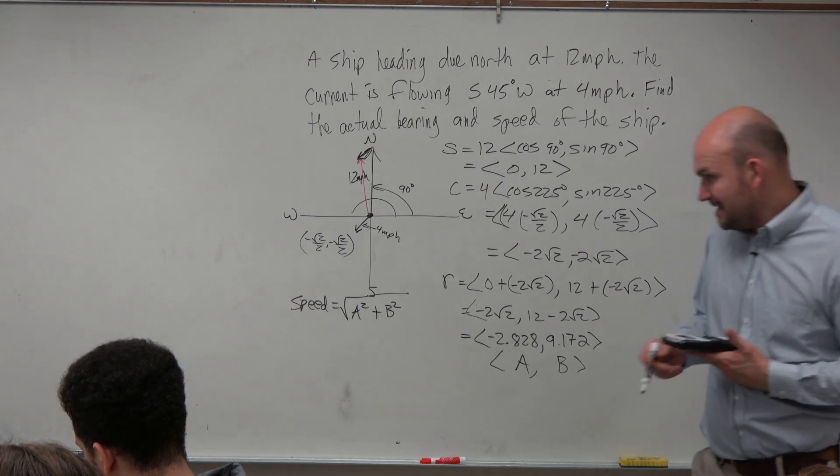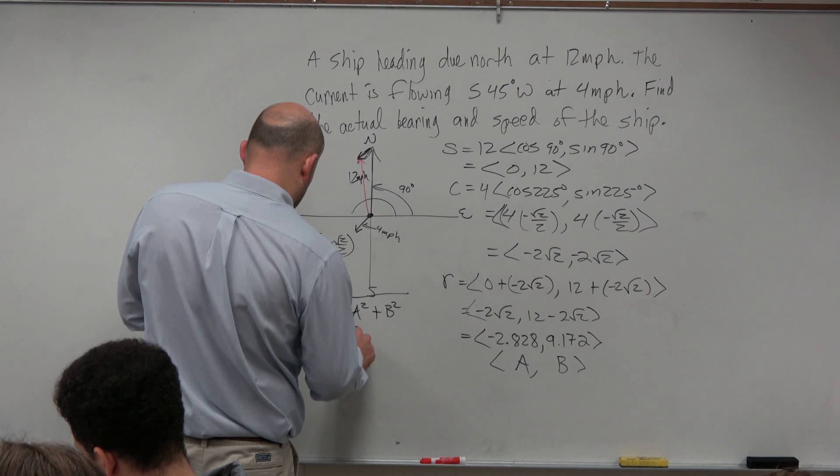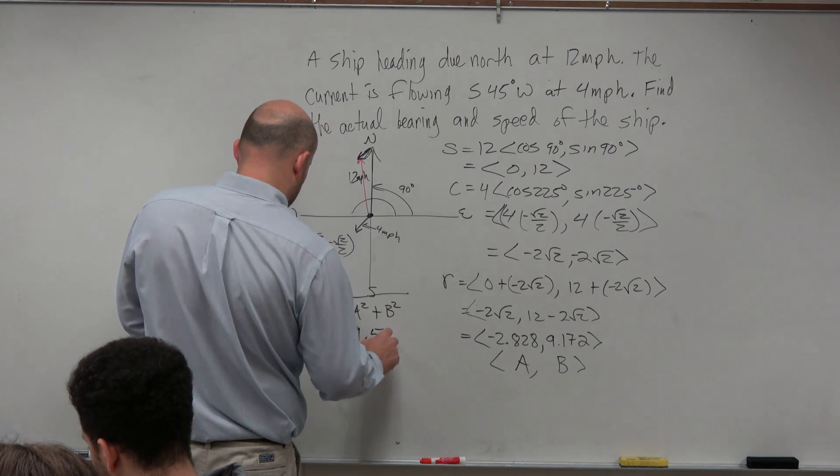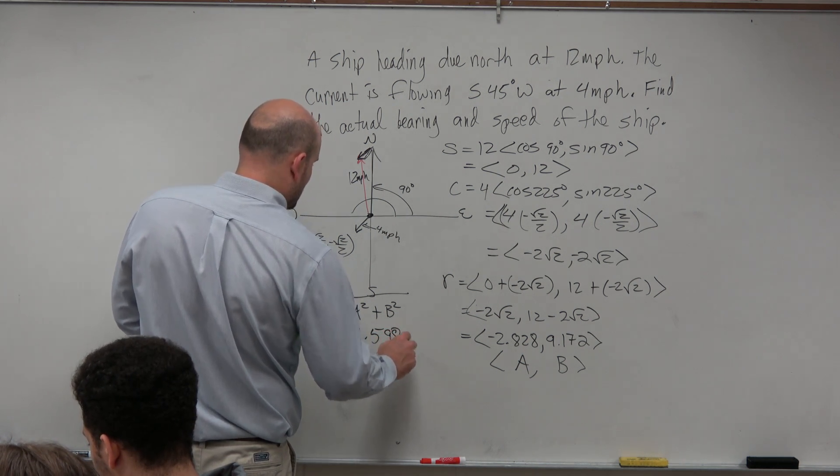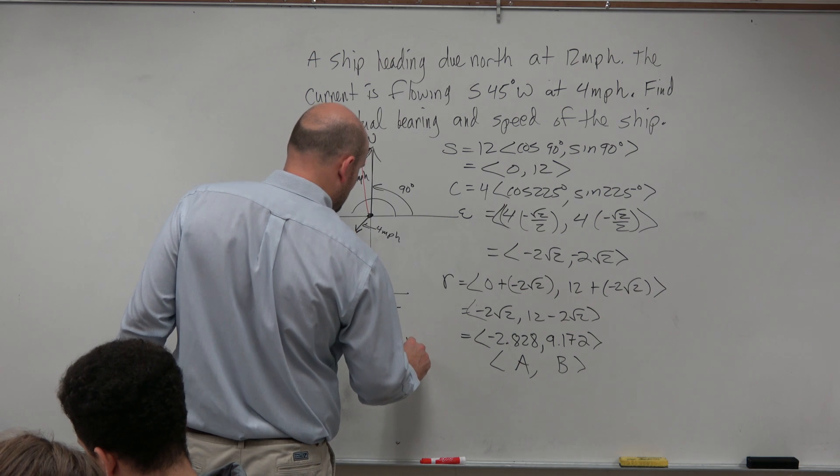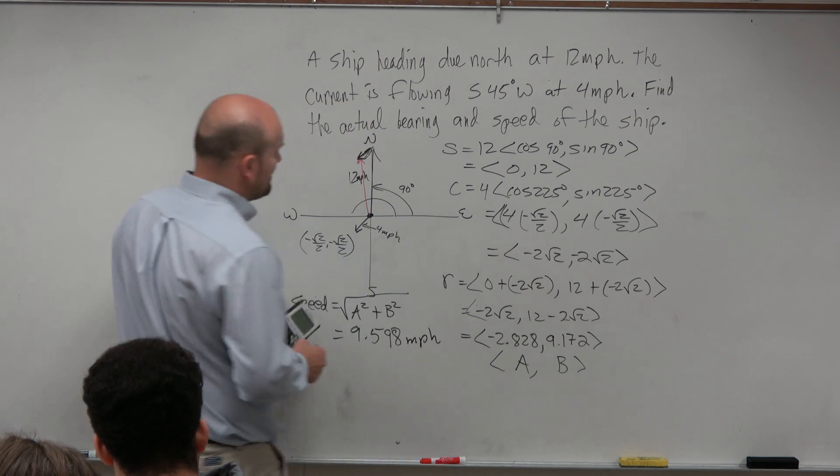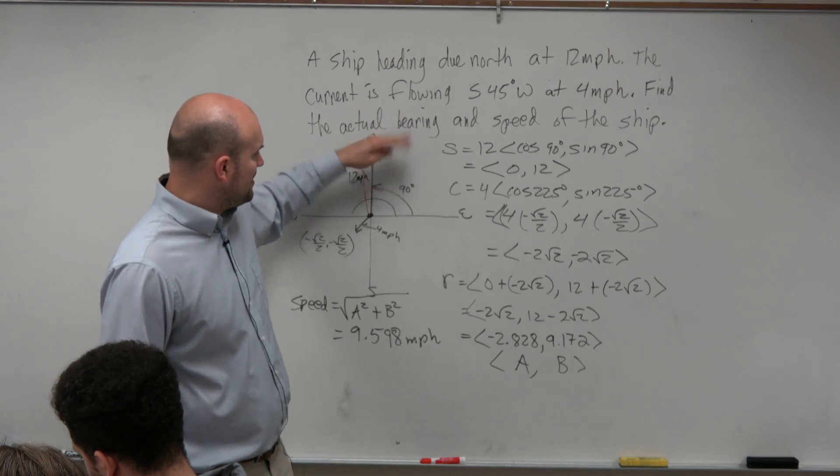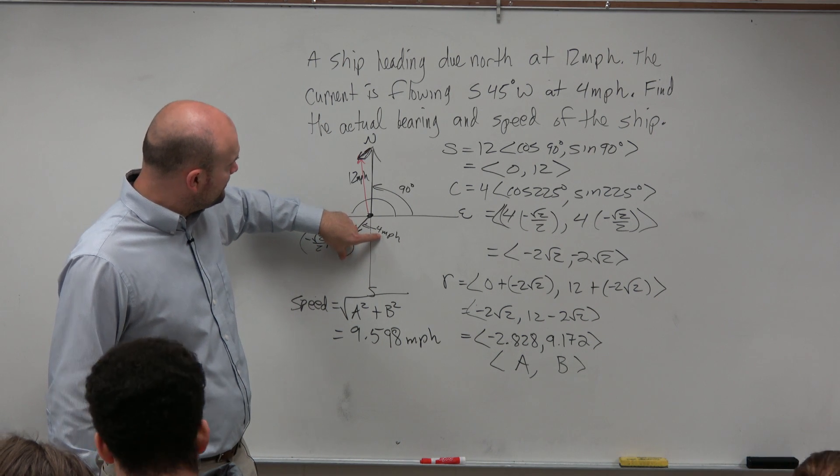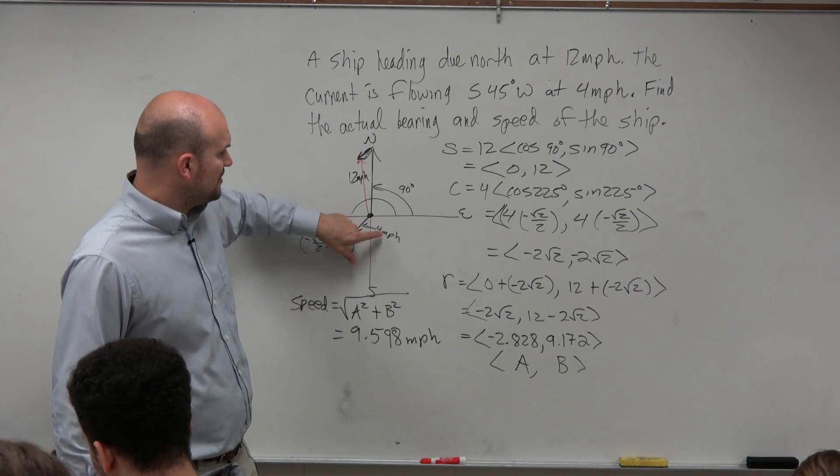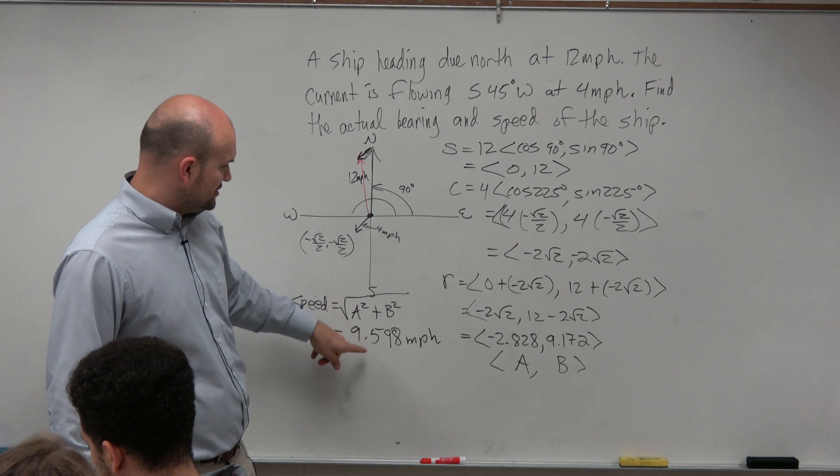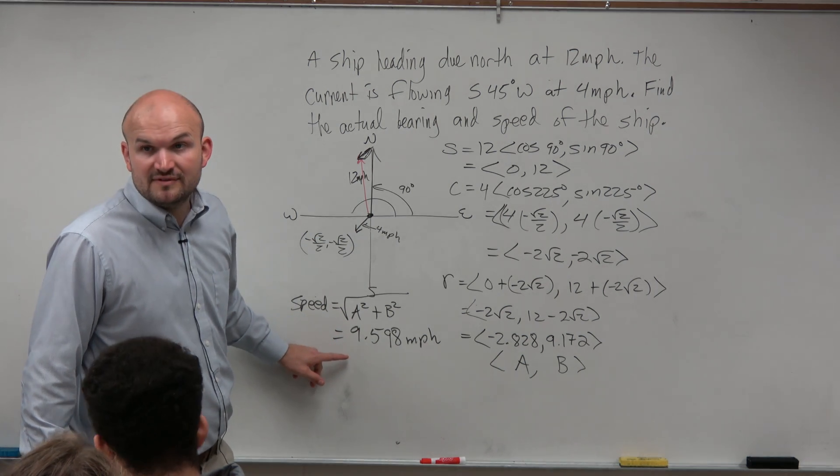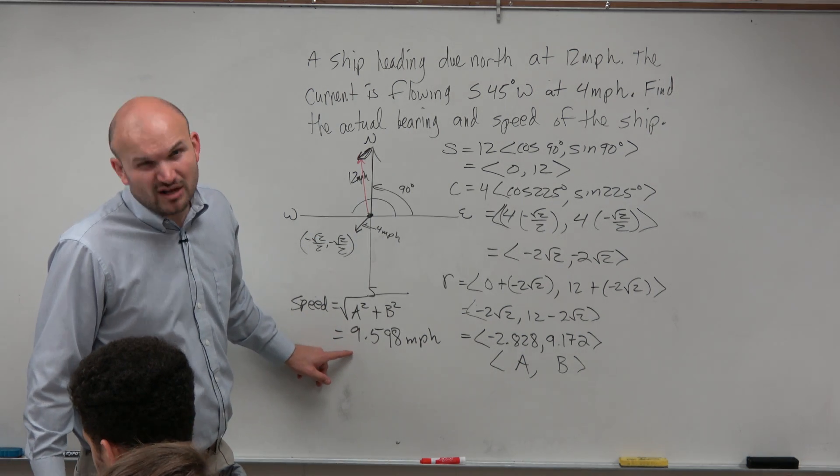So I'll say the square root of alpha A squared plus alpha B squared. And let's see if this answer makes sense. I get 9.598. We're at miles per hour. Does that make sense? If you're originally driving 12 miles per hour, but you have a current that's at 4 miles per hour in the opposite kind of direction, that slows you down to 9.598 miles per hour. Does that make sense? Relative sense, right? Yeah.